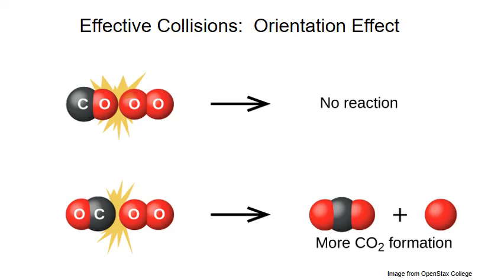Let's look at what we mean by having the correct orientation for a collision. At the bottom we see an effective collision between carbon monoxide and oxygen. The carbon collides with one of the oxygens on the oxygen molecule so that a bond can actually form between the two to make carbon dioxide — that's an effective orientation. In order for that bond to form, the carbon has to hit the oxygen. If the carbon monoxide molecule is switched, as in the top example, that bond's not going to form. Carbon doesn't get anywhere near the oxygen it needs to form a bond with, so no reaction occurs.